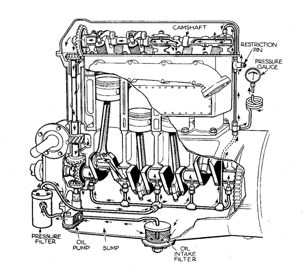To avoid the need for priming, the pump is always mounted low down, either submerged or around the level of the oil in the sump. A short pickup pipe with a simple wire mesh strainer reaches to the bottom of the sump.